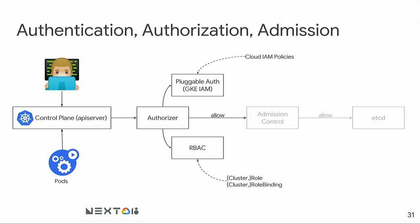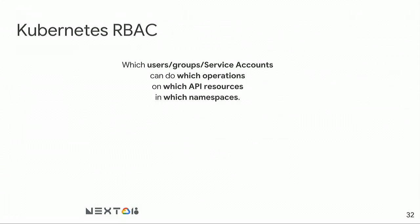In Kubernetes authentication and authorization, requests go through the Kubernetes API and then into etcd. When you or a pod calls the Kubernetes API, the request is first authorized, either through Kubernetes RBAC or Google Cloud IAM. If you're a Google user, you can be authorized to GKE via the IAM authorizer. If you're a Kubernetes service account — an identity given to pods — you go through RBAC. If RBAC allows you, the next step is admission control.